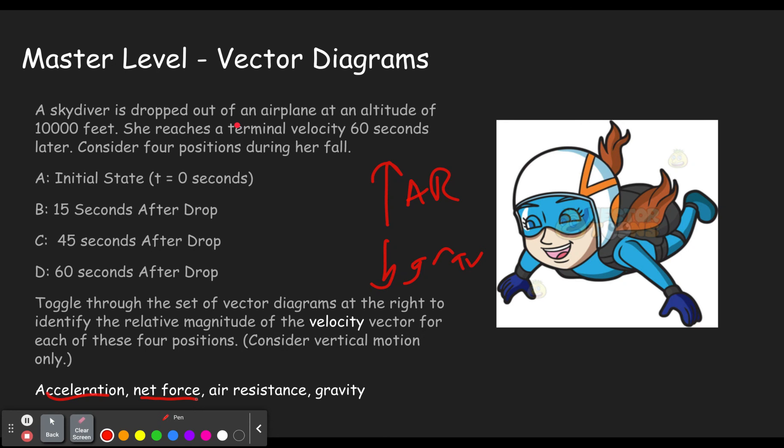Net force goes just like acceleration starts out as the weight up here. And then as it goes and the acceleration and the air resistance gets bigger and bigger, the net force gets smaller and smaller until these two are equal. And then the net force is zero at terminal velocity.